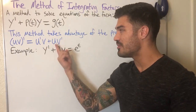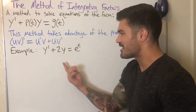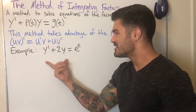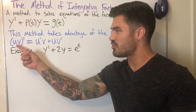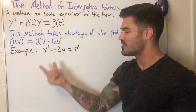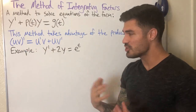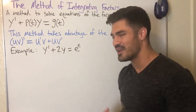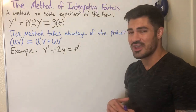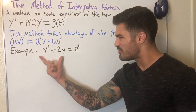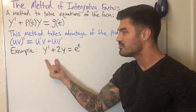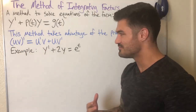What we can notice is that y prime and y kind of looks like u prime and u. So what we can do is multiply both sides of this equation by something to get a product rule situation on the left-hand side. This is different — we're used to using the product rule going forward, but now we're going backwards: taking two terms and rewriting them as the derivative of a product. That's our goal.